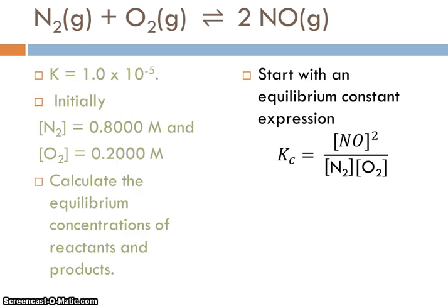A sample of air has an initial concentration of nitrogen of 0.8 molar and initial concentration of oxygen of 0.2 molar before the reaction occurs. So those are our initial concentrations. Calculate the equilibrium concentrations of the reactants and products after the mixture has been heated to 1500 Kelvin. The first thing we should do is start with an equilibrium constant expression.